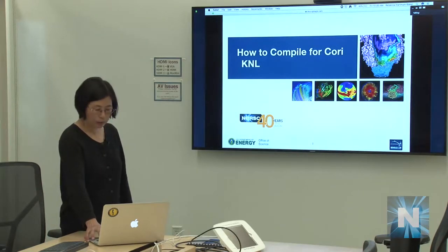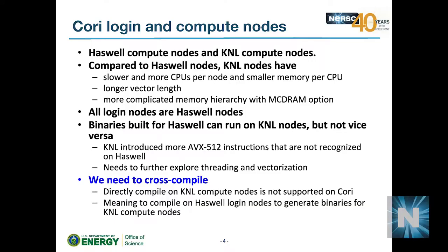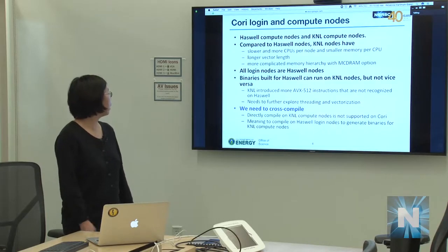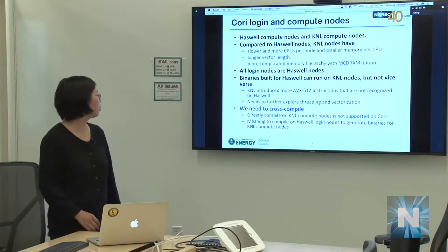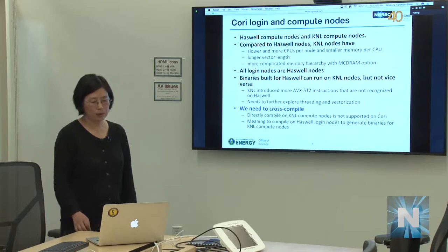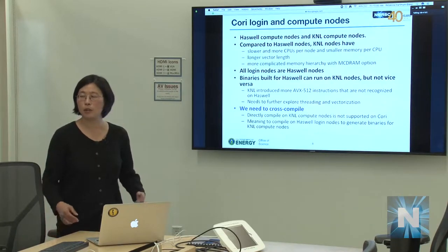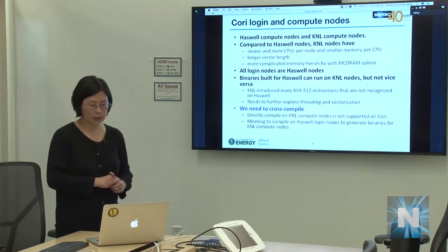The next topic is about compiling. Cori has two types of compute nodes: Haswell nodes and KNL compute nodes. Compared to Haswell, KNL nodes have much slower CPUs, more CPUs per node, and a smaller memory per CPU. KNL has longer vector lengths to explore, a complicated memory hierarchy — especially when considering MCDRAM — and different cluster modes.